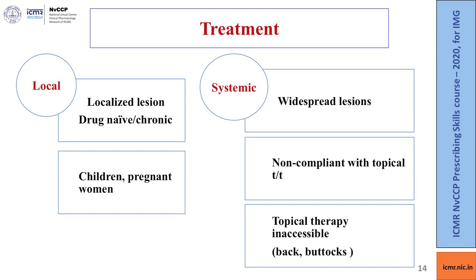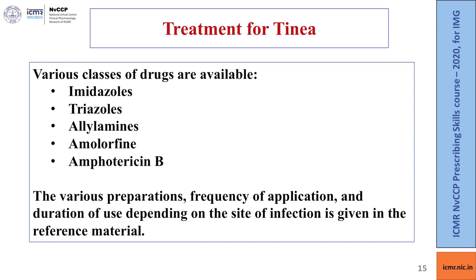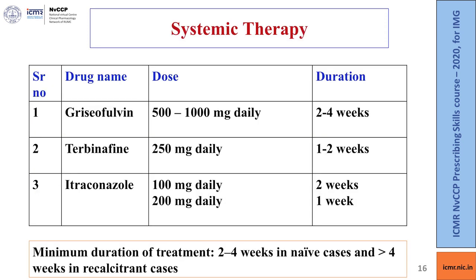Systemic therapy is preferred when lesions are widespread, the patient is non-compliant with topical therapy, or the area is inaccessible, such as the back and buttocks. For the present case, the diagnosis is tinea corporis. Various drug classes are available: imidazoles, triazoles, allylamines, amorolfine, and amphotericin B. Preparations, frequency of application, and duration of use depending on site are given in the reference material.